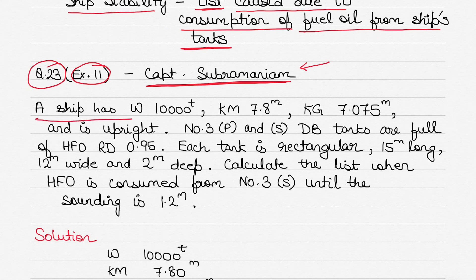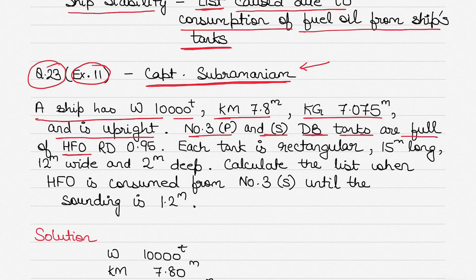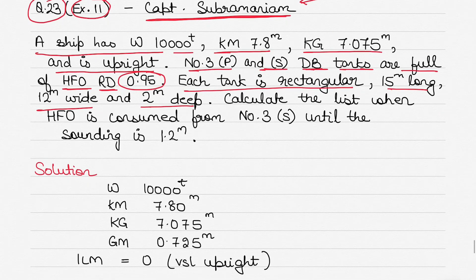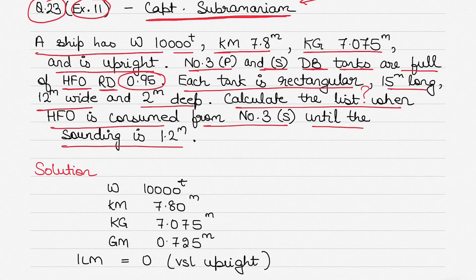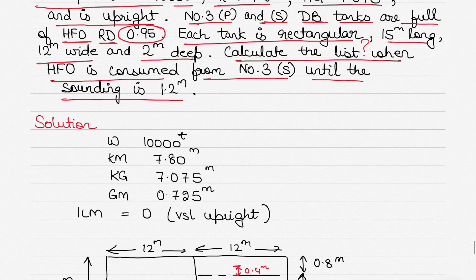The question: a ship has a displacement of 10,000 tons, KM 7.8 meters, KG 7.075 meters, and the vessel is upright. Number three port and starboard double bottom tanks are full of heavy fuel oil of relative density 0.95. Each tank is rectangular — 15 meters long, 12 meters wide, and 2 meters deep. Calculate the list when fuel oil is consumed from only number three starboard until the sounding on the tank is 1.2 meters.